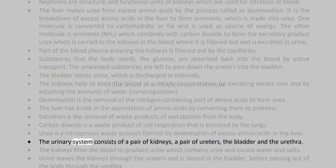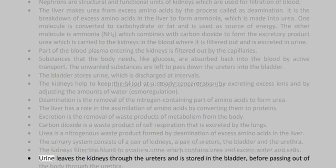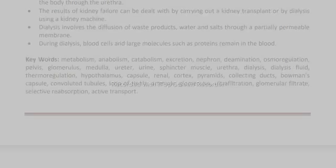The urinary system consists of a pair of kidneys, a pair of ureters, the bladder, and the urethra. The kidneys filter the blood to produce urine, which contains urea and excess water and salts. Urine leaves the kidneys through the ureters and is stored in the bladder before passing out of the body through the urethra.